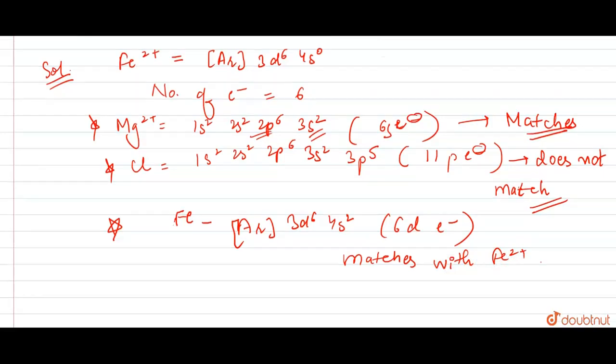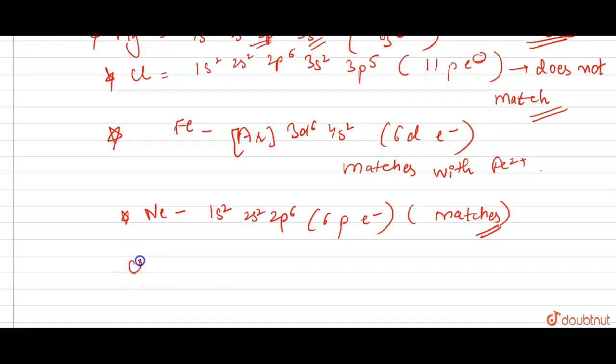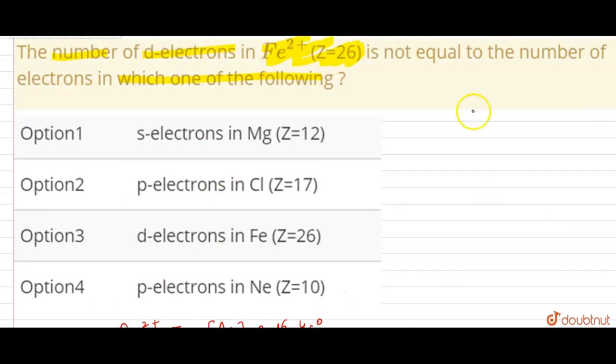Let's see chlorine. In Cl, what has been given? 1S2 2S2 2P6 3S2 and 3P5. So what will happen? P electrons - this will be 11 p electrons total. It does not match with 6 d electrons of Fe2+.